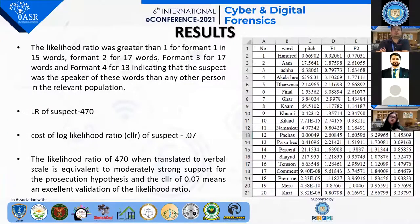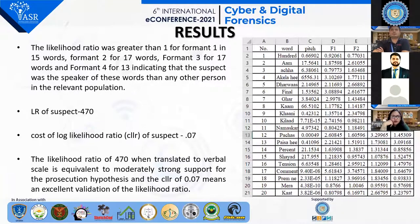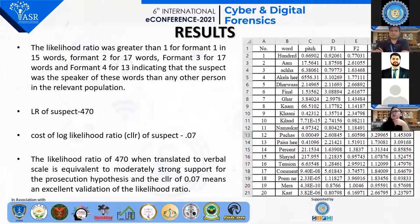In the results, 13 words had the same three-peak formant and peak matching, while the other words had only two formant peak matches. According to the ABRE standards of reporting, there was a probable identification. After calculating the likelihood ratio, for formant one, 15 words had a likelihood ratio greater than one; for formant three, 17 words had a likelihood ratio greater than one; and for formant four, 13 words had a likelihood ratio greater than one. This indicated that the suspect is the speaker for all these words rather than any other person in the relevant population.